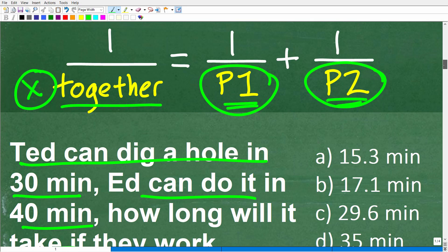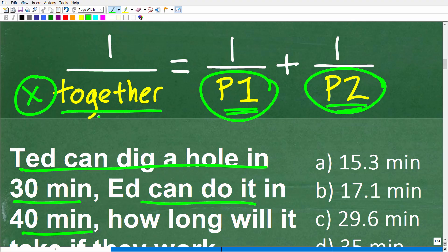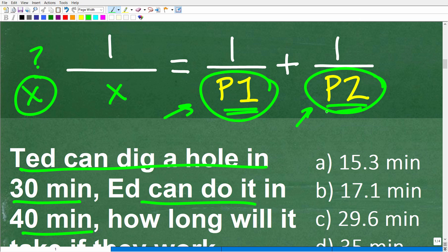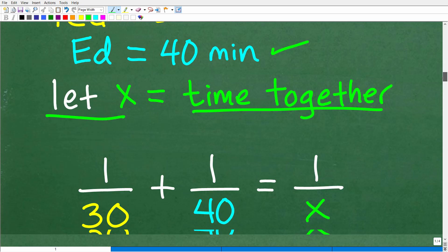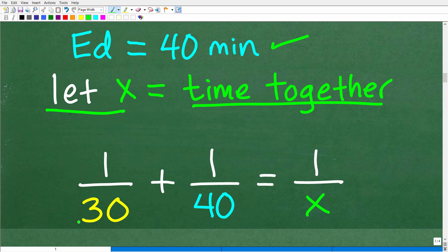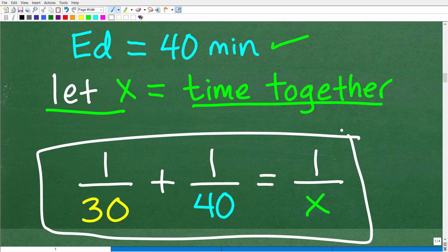We're going to go back here and reference this equation. That time it takes them working together, we don't know that. So we're going to let that be the variable X. I'll just do it right here. So this would be 1/X. And then we're going to plug in Ted's and Ed's time respectively. We're going to end up with something like this: 1/30, this is the time it takes Ted to do the job, plus 1/40, this is the time it takes Ed to do the job, is going to be equal to 1/X. This is the amount of time it's going to take them working together. This is how the setup goes for a typical type of algebra work problem.